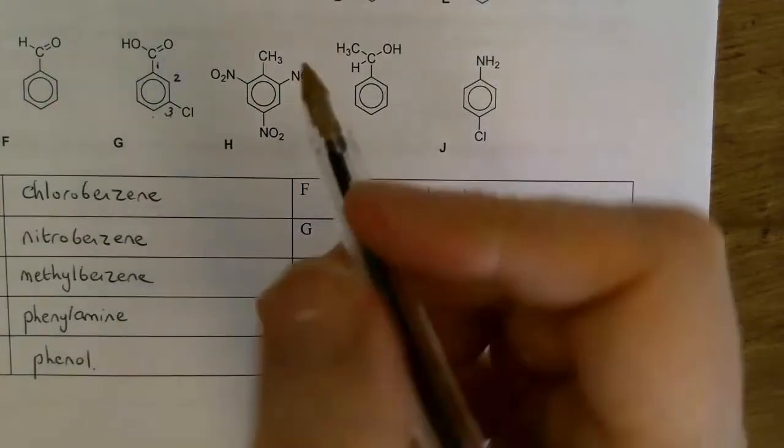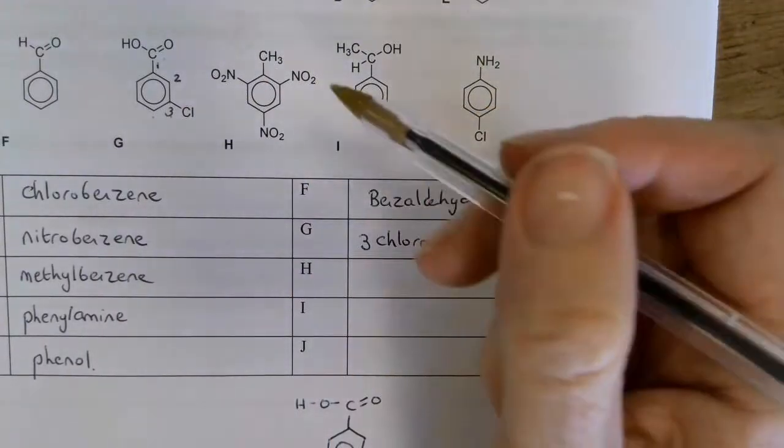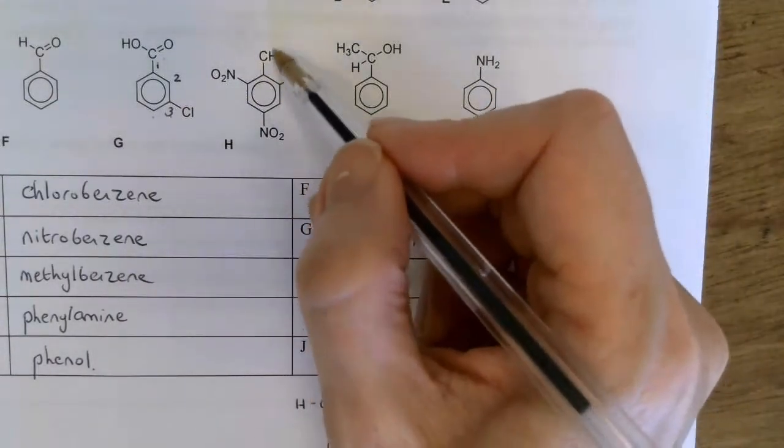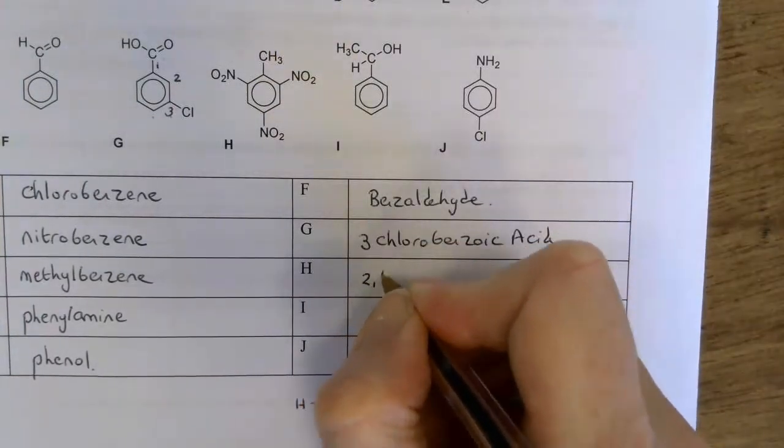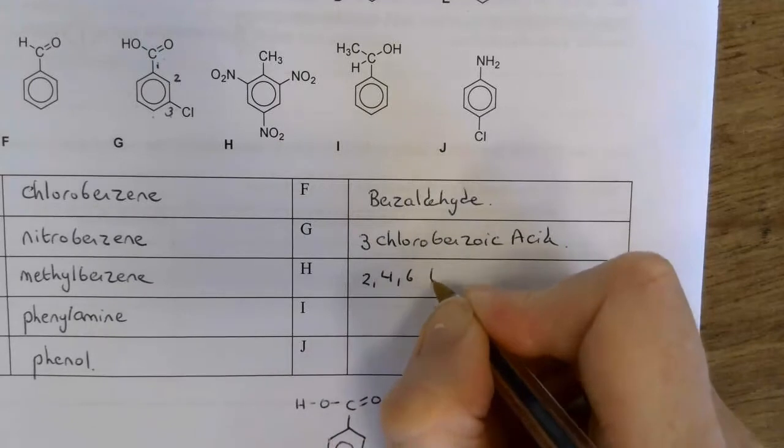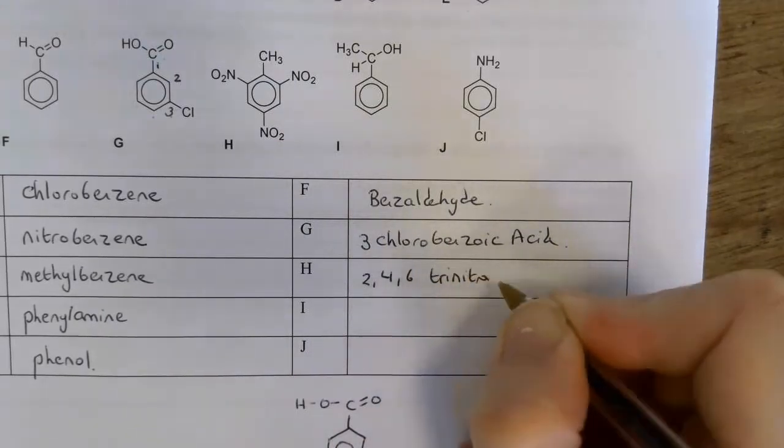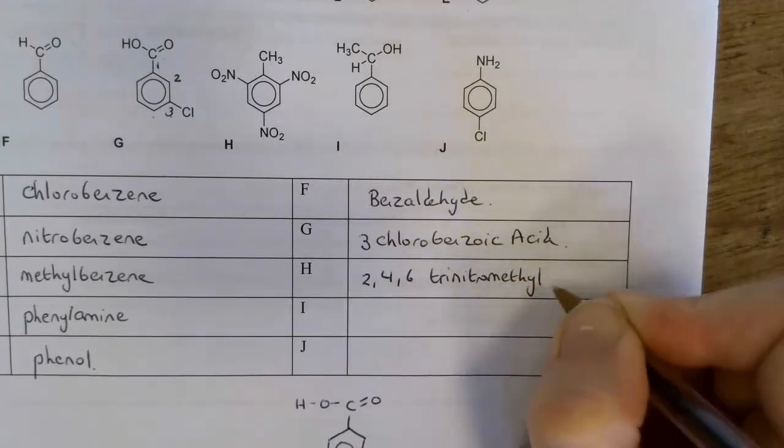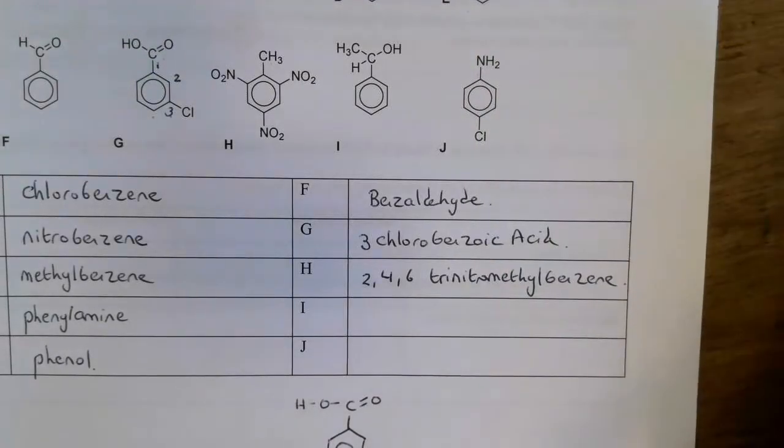H is quite straightforward. We've got three nitro groups on our benzene ring and we've got this methyl group here. So this is 2,4,6-trinitromethylbenzene.